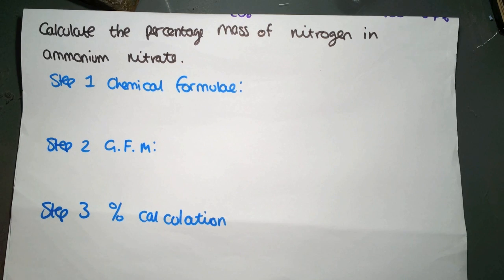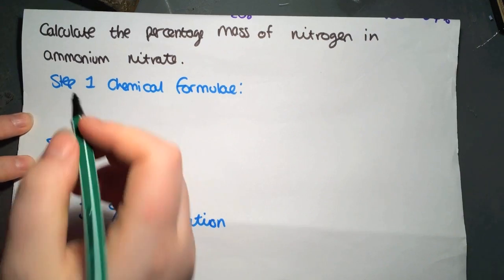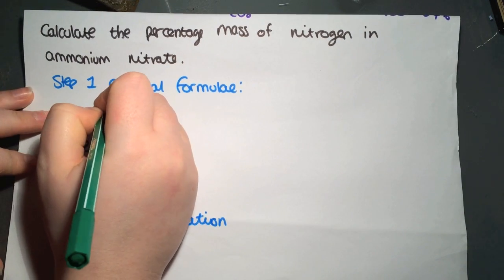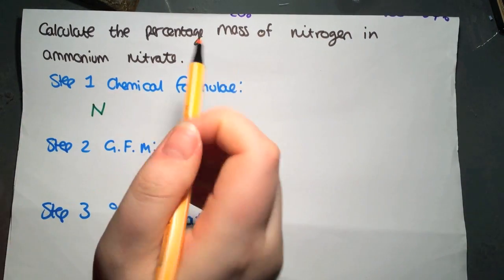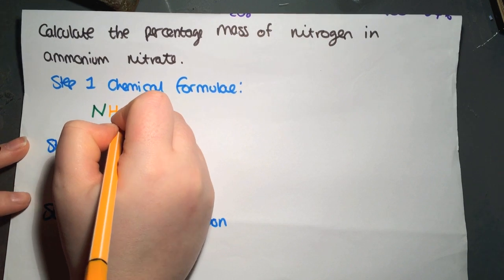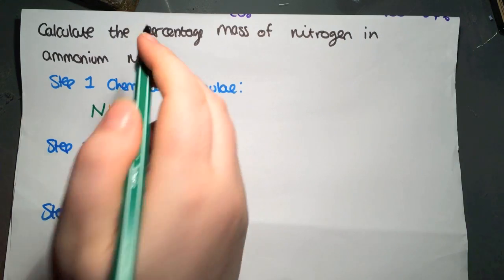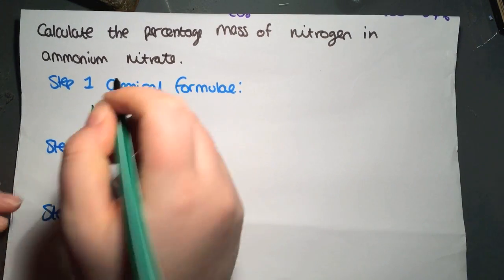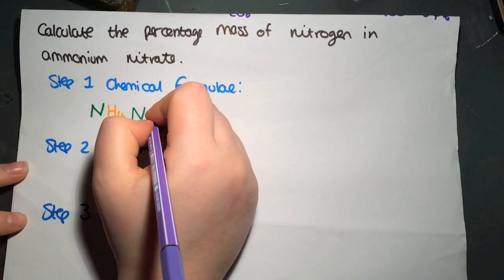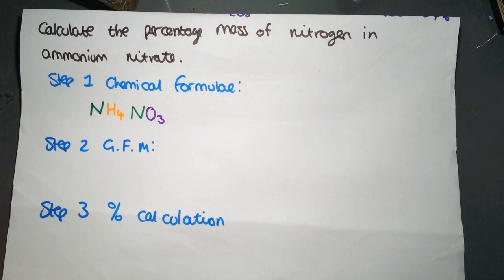We're looking at ammonium nitrate, both group ions that you can find in your data book. So ammonium is NH4, and it has a valency of 1. Nitrate is NO3, also a valency of 1. So there is our final formula for ammonium nitrate.